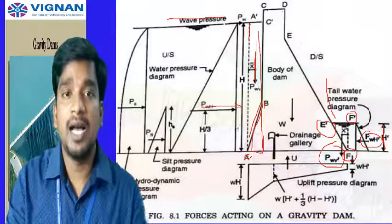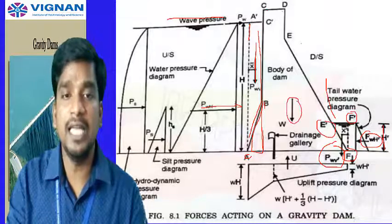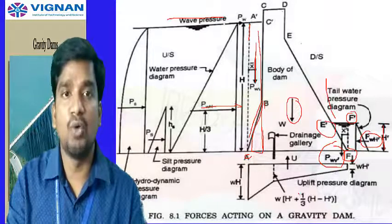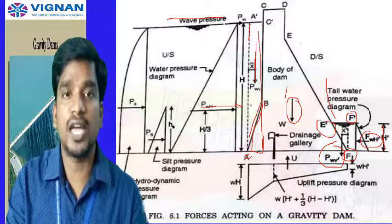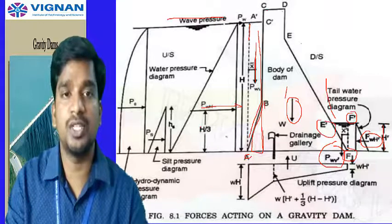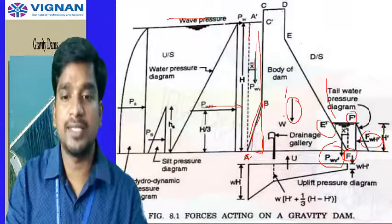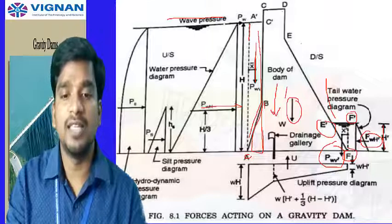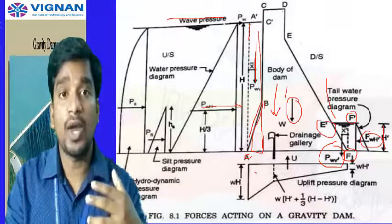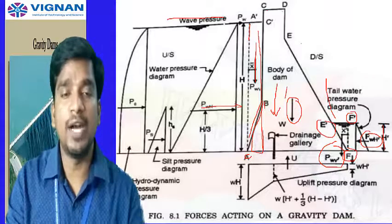The second force is the weight of the dam, indicated by W acting in the downward direction at the center of the dam. This force is completely responsible for resisting all forces acting on the dam — water pressure, wave pressure, ice pressure, earthquake forces, wind forces, etc. This vertical weight creates a vertical stress that stops forces trying to lift, overturn, or slide the dam.